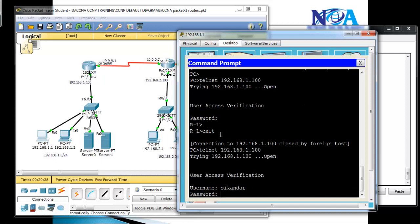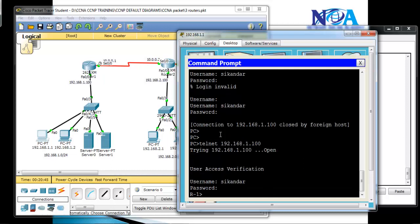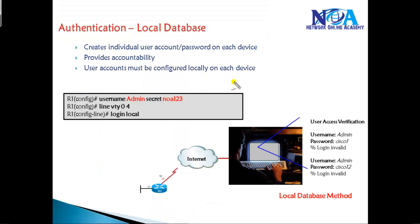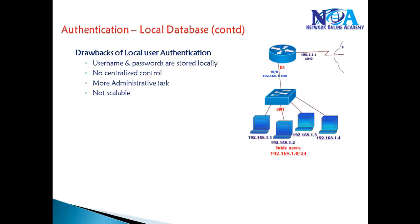Let's verify the same from Telnet. Now it's asking for the username and the password — 'cisco123' — and I can see I'm able to log in. These are the different options we have. 'No login' is recommended more in lab scenarios but strictly not recommended in production networks. The 'login' option prompts for the password configured under that particular line. 'Login local' allows you to use the local username and password created on that device.